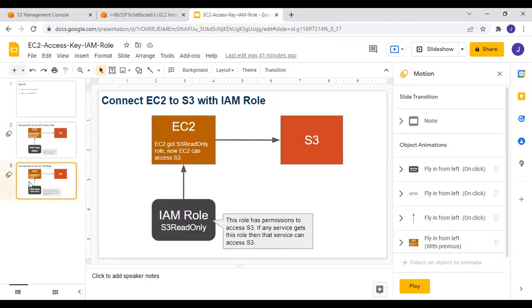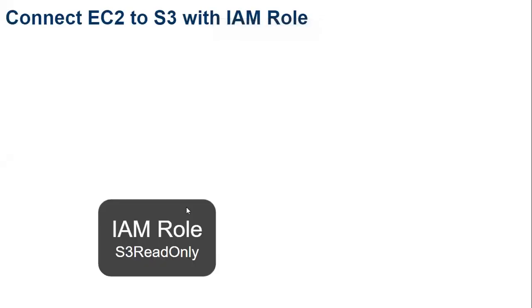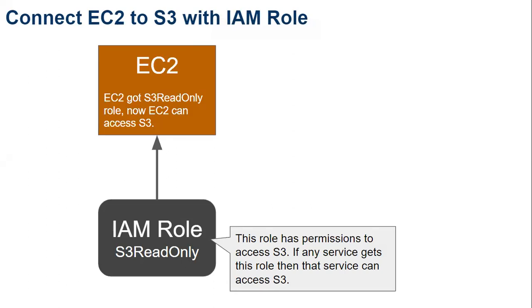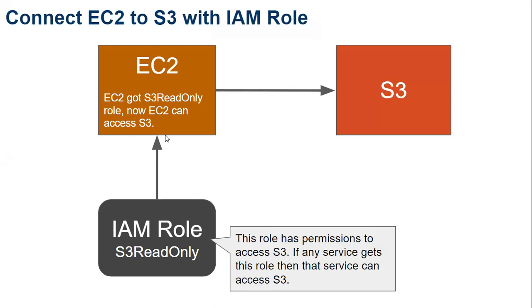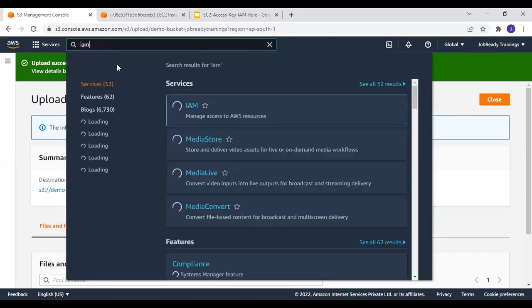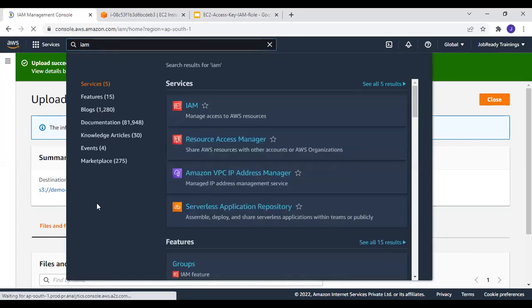Going back to the presentation: we'll create one IAM role named S3ReadOnly. This role has permission to access your S3 bucket. We are going to assign this role to the EC2 instance — that means the EC2 instance will be able to access S3 because of the assigned IAM role, without needing to store any access key ID or secret key. Let's implement this in the AWS account.